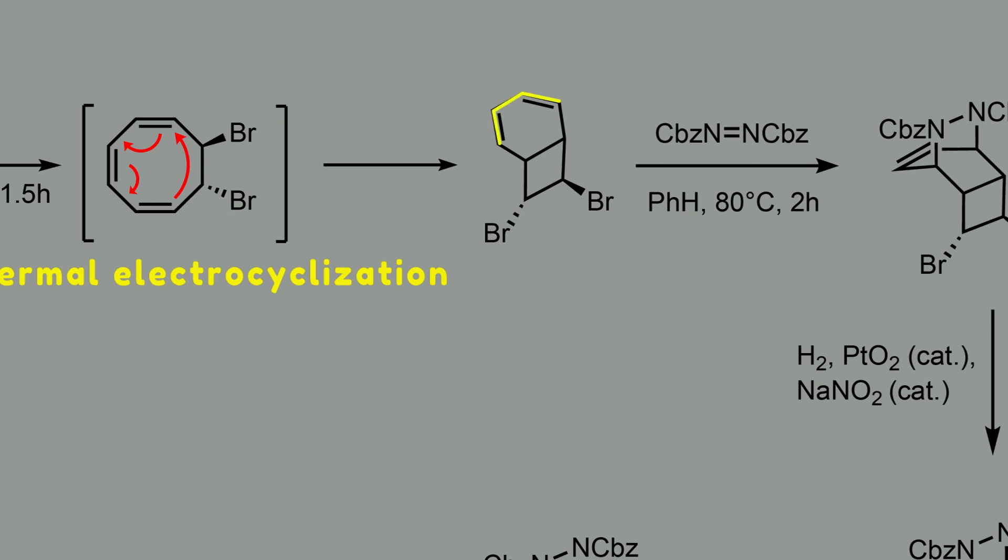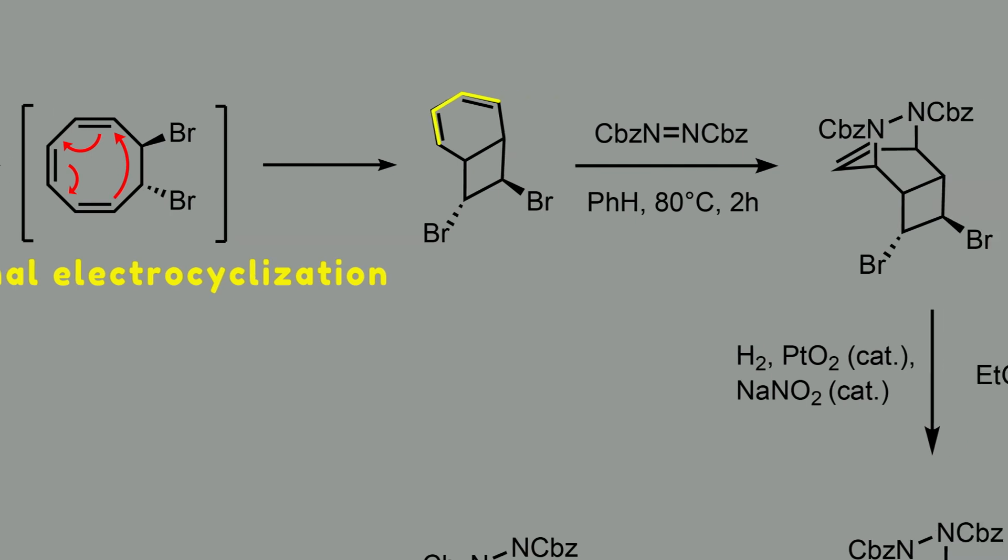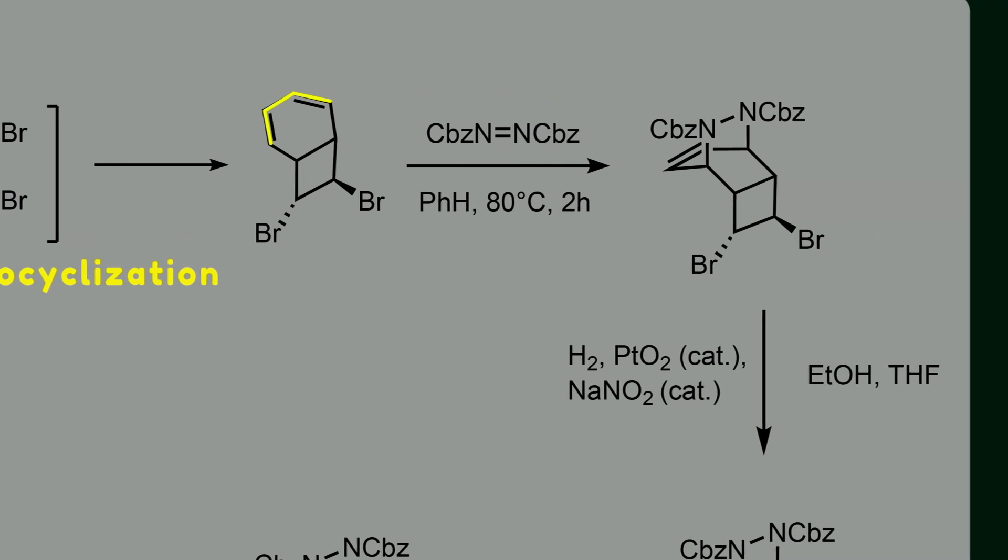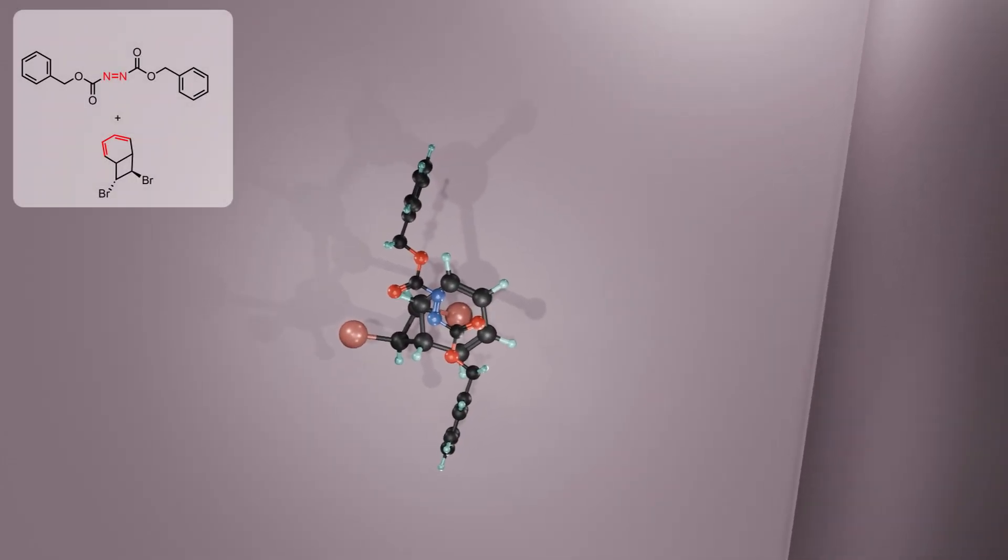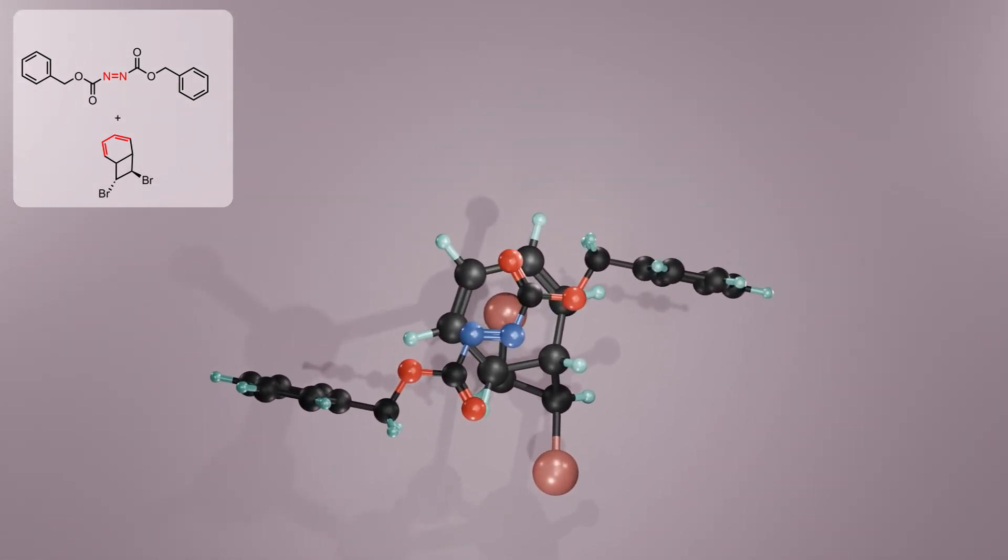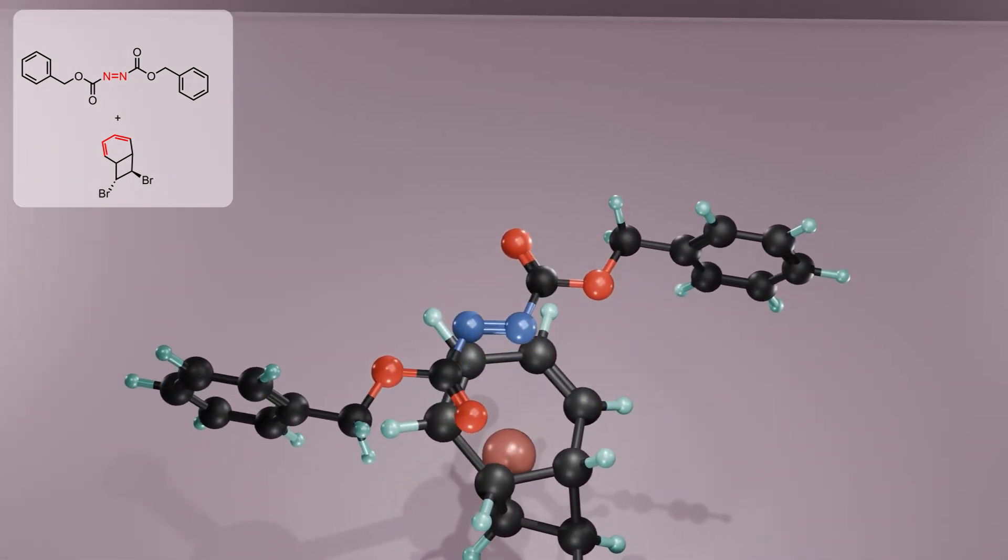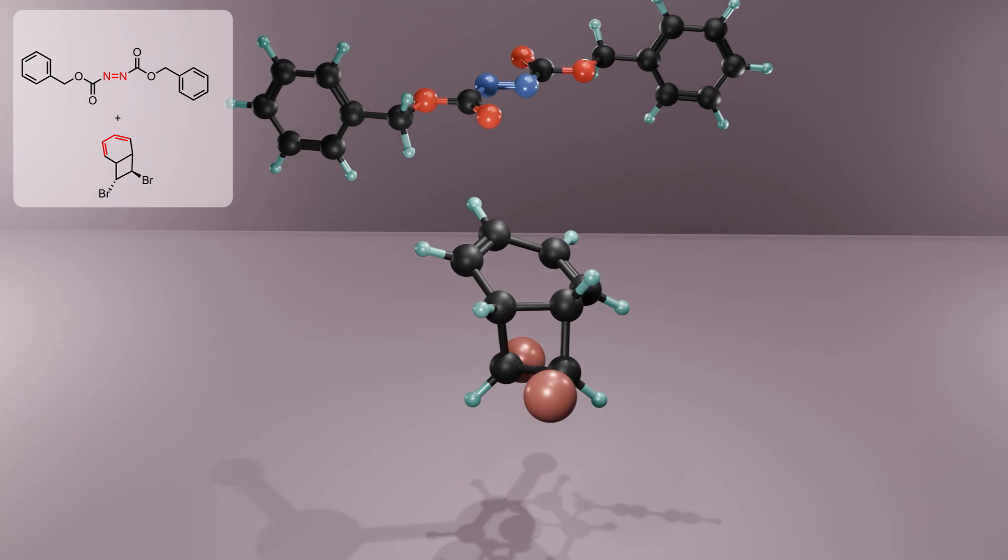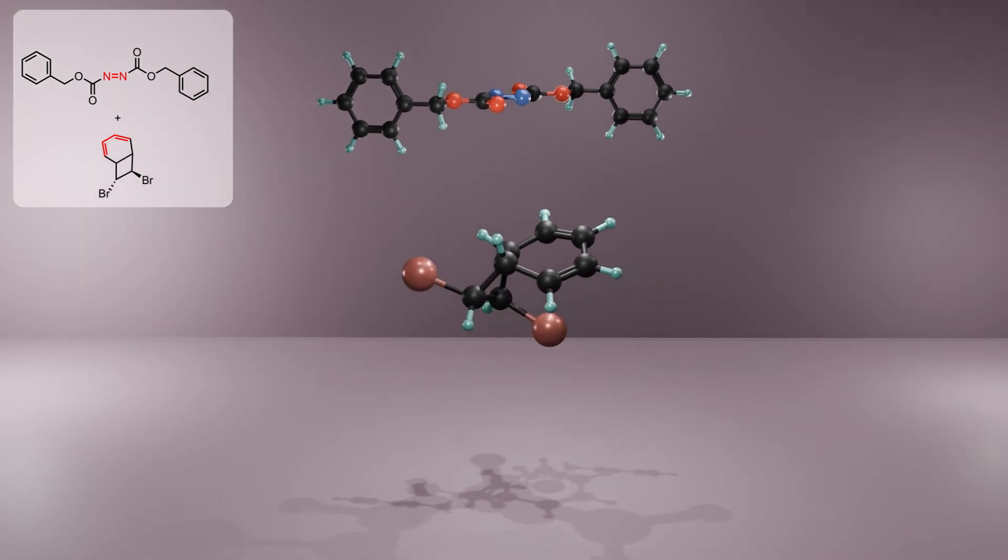This forms a rigid system which is appropriate for cycloaddition reactions. Adding dibenzyl azodicarboxylate triggers a hetero Diels-Alder cycloaddition, which provides tricyclic compounds. Notice that there are two options for approaching of dienophile to the diene moiety. The orientation of dibromide is consistent with an approach of the dienophile from the convex face of the bicyclic diene.